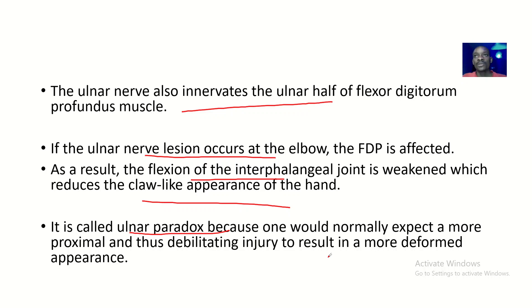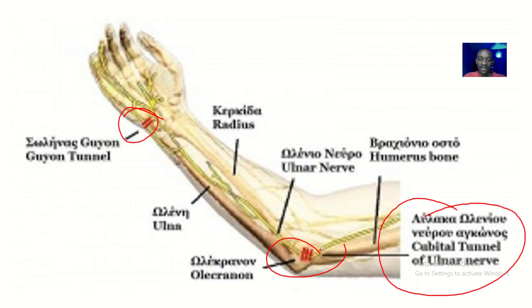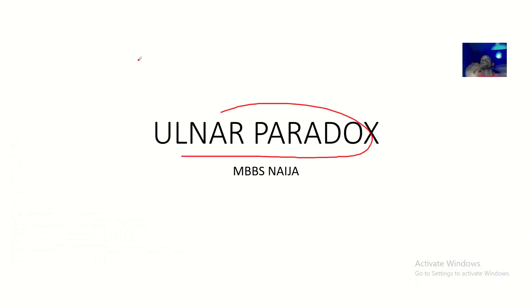Just a summary: the ulnar nerve can be damaged at the elbow and also at the wrist. When damaged at the elbow, it affects the flexor digitorum profundus, which is the chief flexor of your phalanges. If the chief flexor of your phalanges is affected, there will be reduced clawing of the hand, because the muscle that would have made the clawing worse is affected. That's the ulnar nerve paradox.